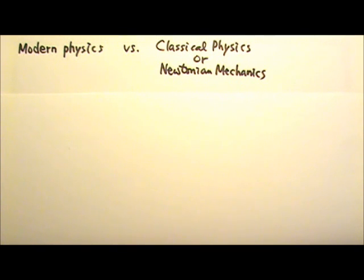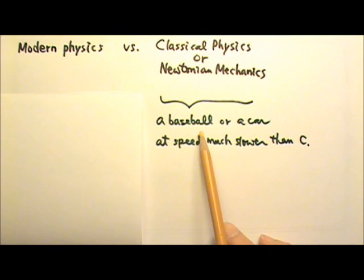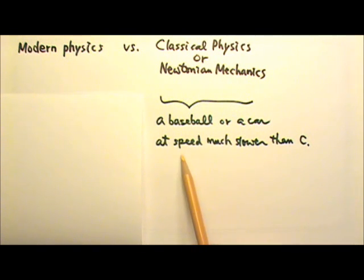This unit is called modern physics, as opposed to classical physics or Newtonian mechanics. Usually modern physics refers to branches of physics developed from early 20th century onward. Classical physics usually concerns events we would normally observe, for example, a baseball or a car that is moving at speeds much slower than the speed of light.